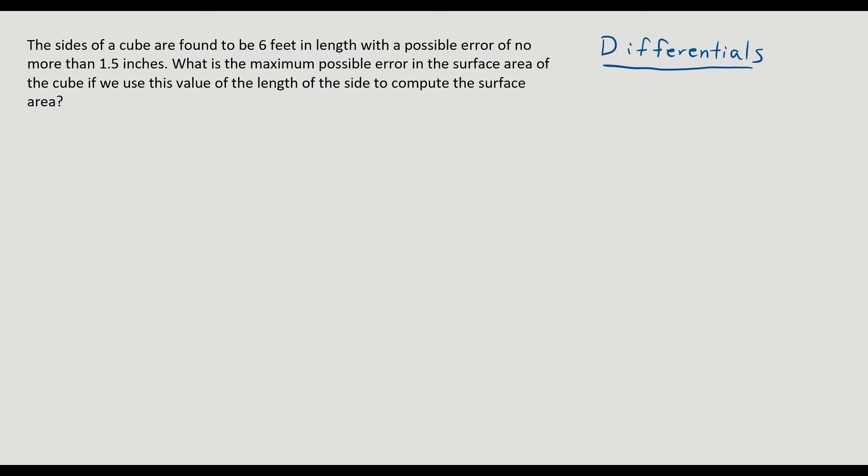So the problem we're going to work with is the sides of a cube are found to be 6 feet in length with a possible error of no more than 1.5 inches. What is the maximum possible error in the surface area of the cube if we use this value of the length of the side to compute the surface area? Well the first thing, let's just get this out of the way, we should have the same unit. So instead of 6 feet, we want to say 72 inches.